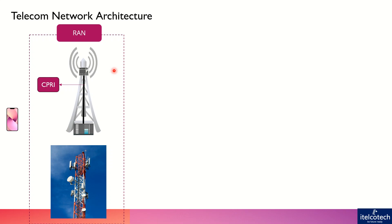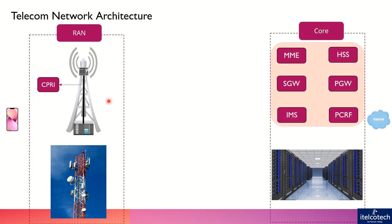Any information coming from the user equipment or going towards the user equipment has to go back to the core network. We basically have a data center which has different functionalities. Any user who wants to access the network should be a legitimate user — they should have a certain kind of subscription to allow and avail certain services. There are different nodes present to ensure how the information coming from or going towards the user will move across the network.